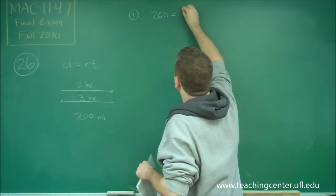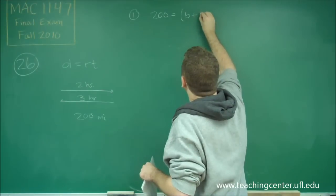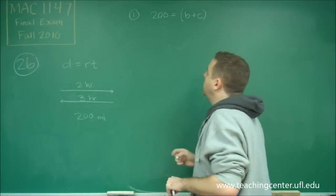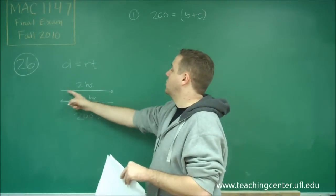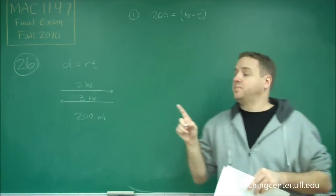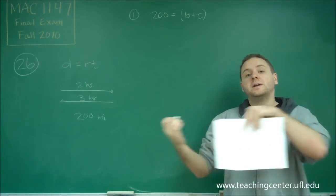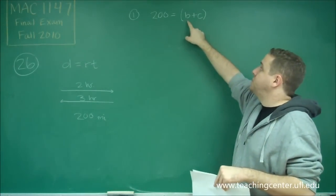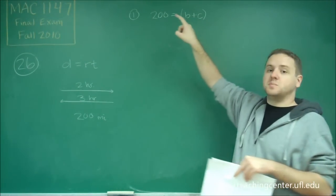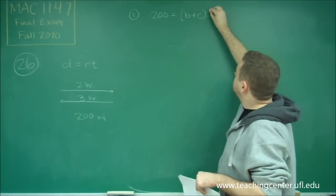So let's call the rate B plus C. And we know that it's plus, because you're going with the current on that trip. So your speed of your boat and the current is helping you along, so our speed must be the speed of our boat plus the speed of the current. And you know that the time took two hours.